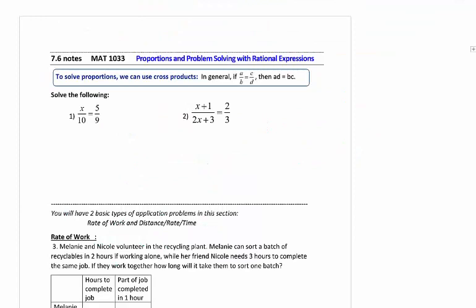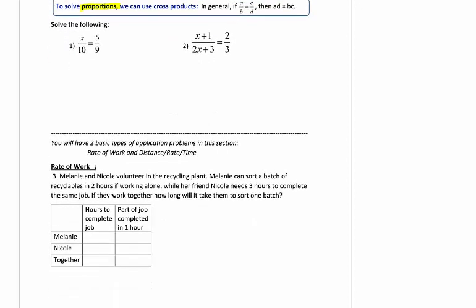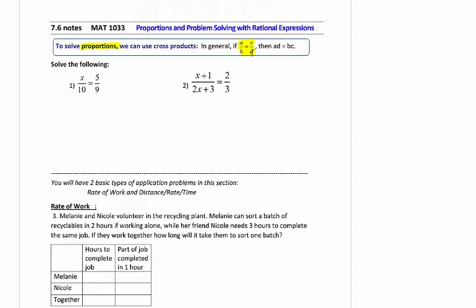So we're going to first start off with proportions. And I want you to realize that this is kind of what we call a special case. These proportions are where we have a rational expression equals a rational expression, or a fraction equals a fraction. If it's a fraction equals a fraction, or a rational expression equals a rational expression, you can cross multiply. That's the key. This only works if it's a proportion.